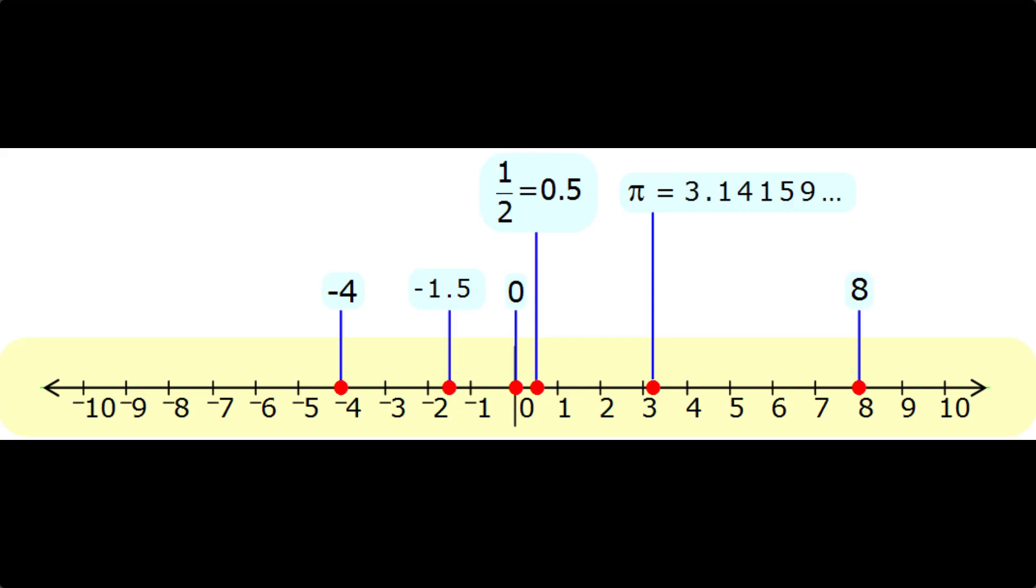The real numbers can be represented on a number line. Every place on this line has either an integer, a rational number, an irrational number, or zero. The line is fully packed with real numbers. There are no empty spaces.